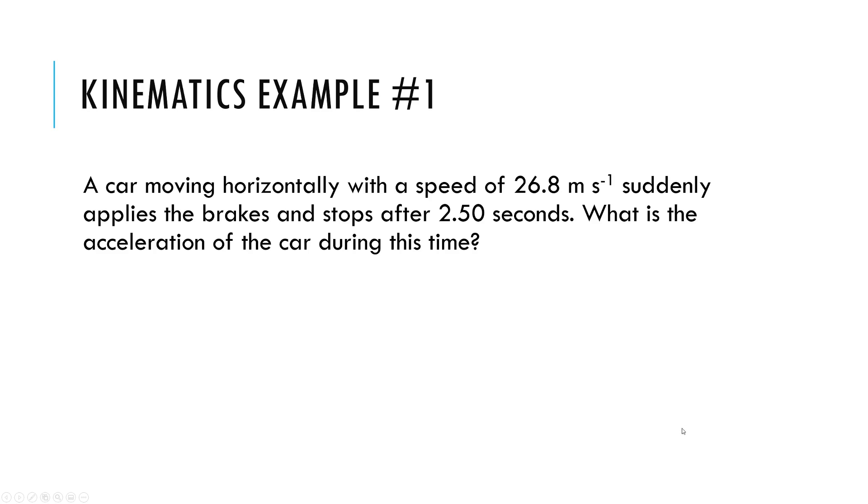Here's some examples of this method. The method I encourage you to use is a SUVAT table. You make a table, list the values that you know, list the value that you need, and it will be very clear then what you need to do to solve. So here we have a very basic problem where a car moves horizontally with a certain speed that suddenly applies their brakes and stops after a certain time. And we want to find the acceleration. So here's how I always set these up. I list out SUVAT, the five variables, and I fill in what I got. So first one's easy. My initial speed is 26.8 meters per second. Obviously, be careful with these velocities.